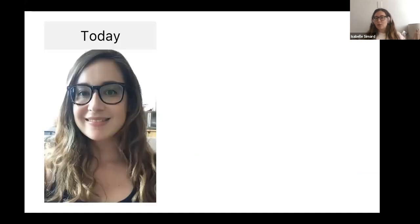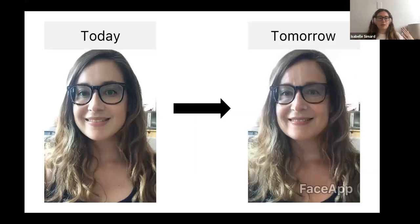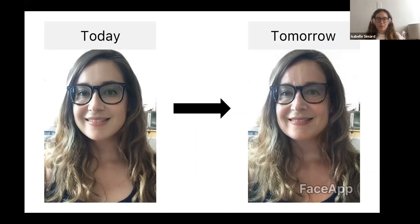Basically the concept of what I was trying to do — we know that apps like FaceApp use different features of the face to predict how your face is going to look in the future. So my idea was to see: can we do the same thing with the brain? Can we use different features of the brain to predict your age? Just like FaceApp uses a combination of features of your face, not just your nose, I was trying to see which combination of brain features would be most predictive of age based on neural activity.